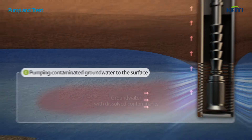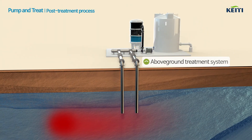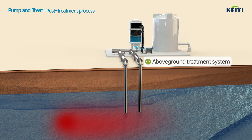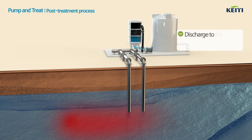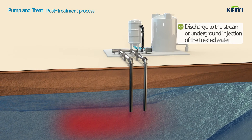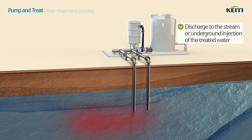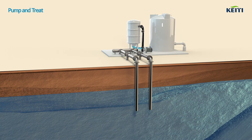The treatment system on the surface treats the contaminated groundwater with various technologies. The remediated water is discharged out to the river or reinjected into the subsurface.